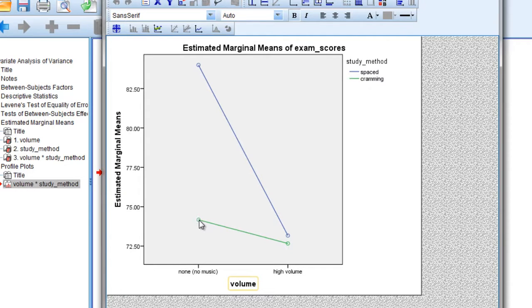So this point right here, for example, since it's the green line, it's cramming, and it's the people who crammed when they had no music. That's what this condition is. Now this condition here is the people, it's green once again, so it's the people who crammed under high volume. Moving up to this circle, or point, we have a blue line. So the blue line is spaced studying, and this, so this represents people who studied under the spaced method, but listening to music with high volume.